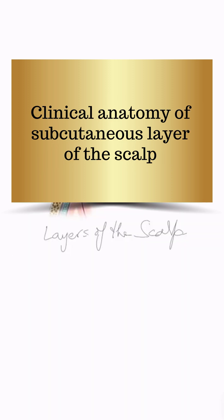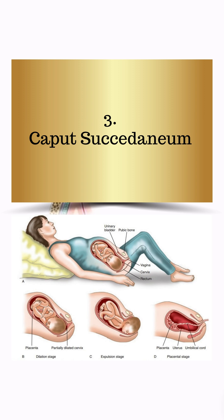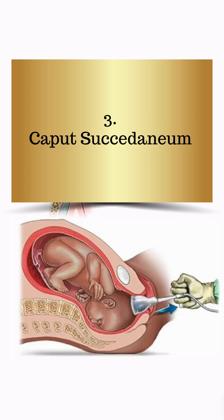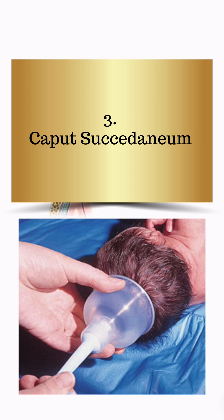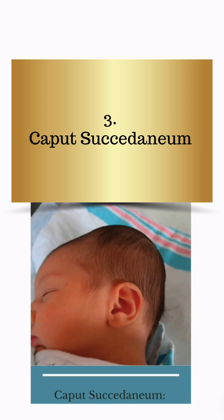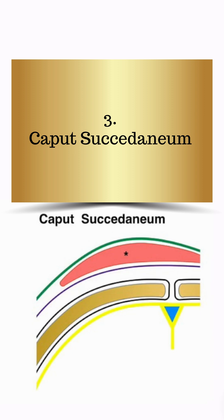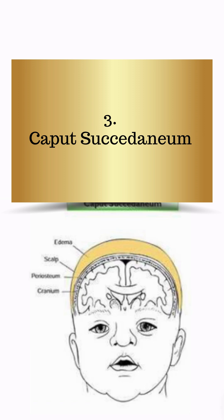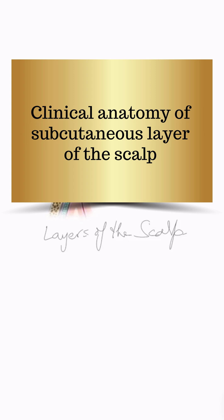An important clinical point relevant to this subcutaneous layer: during the act of parturition, in difficult labor or difficult vertex presentation, because of a large baby head, suction devices are used. Due to suction, sometimes subcutaneous vessels bleed and there is a hematoma which settles in the area of the presenting part. This hematoma is called caput succedaneum, which resolves by itself in two to three days and spreads across the sutures — it is not limited by sutures.